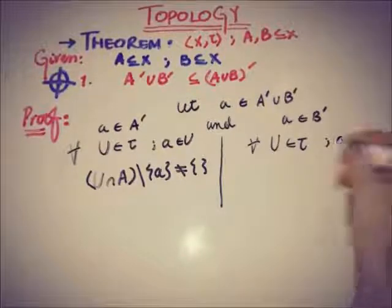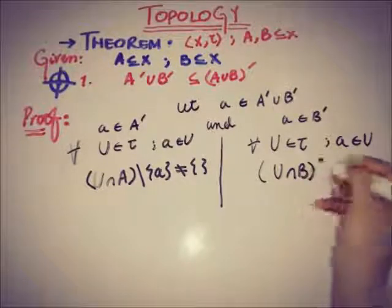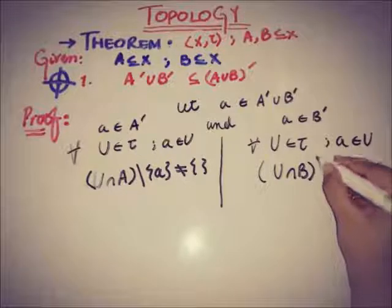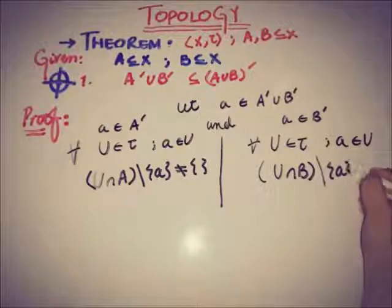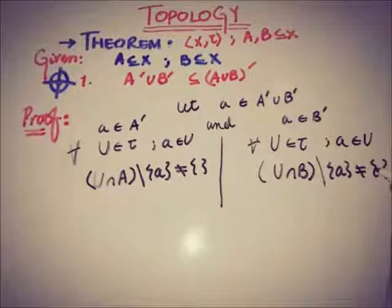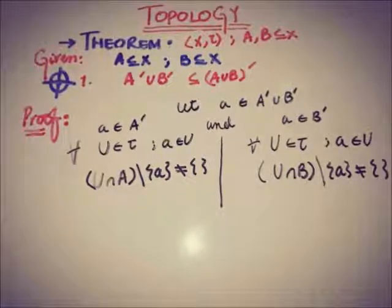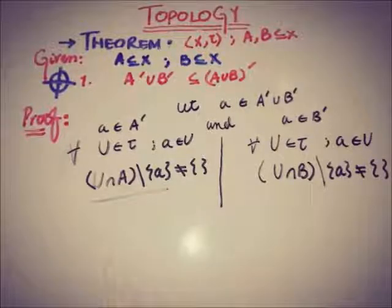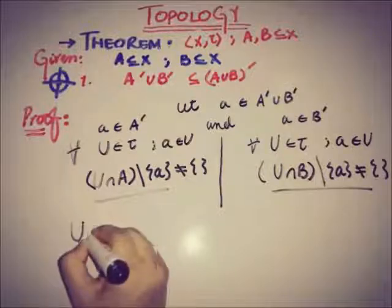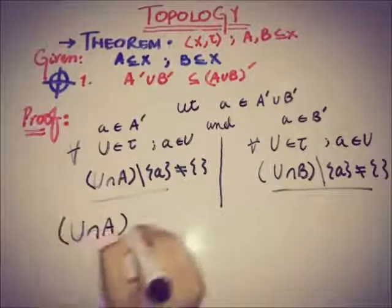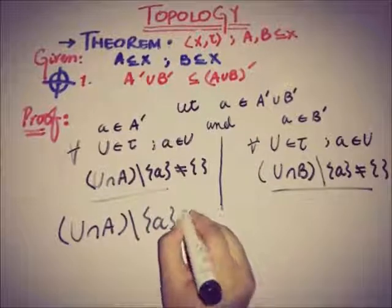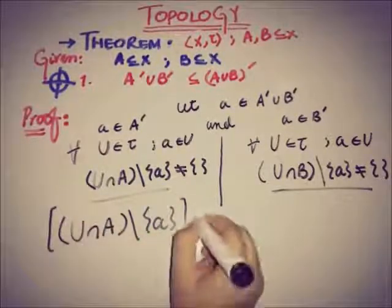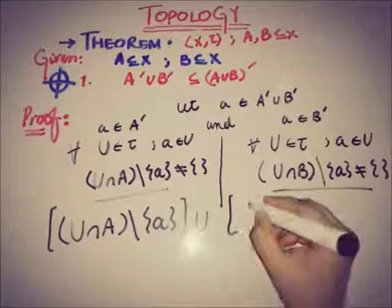Similarly, for all open neighborhoods U of point a, the intersection (U∩B)\{a} is not empty. Now we take the union of both conditions: [(U∩A)\{a}] ∪ [(U∩B)\{a}].